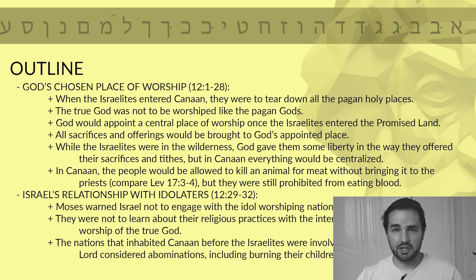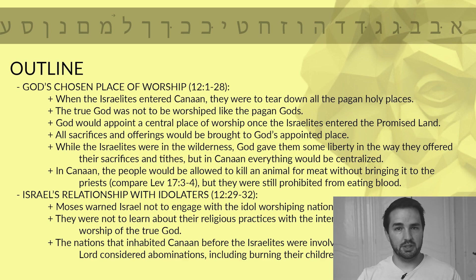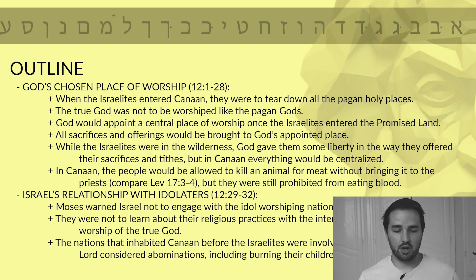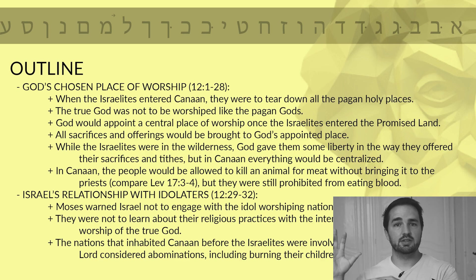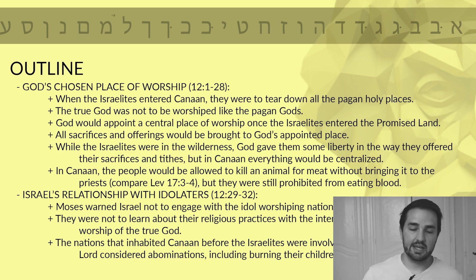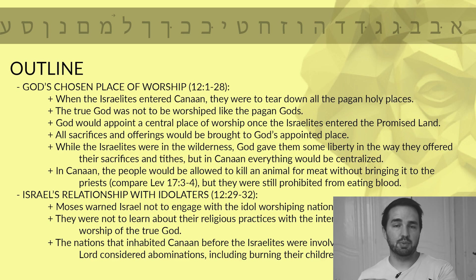I've broken this chapter down into two sections. The first section is definitely the biggest: verses 1 through 28 — God's chosen place of worship. When the Israelites entered the land of Canaan and took it, conquering it from the pagan people who lived there, they were supposed to tear down all of the pagan holy places where false gods were worshipped. The true God was not to be worshipped in the same way that the pagan gods were worshipped. Moses tells the people that God was going to appoint a central place of worship once the Israelites entered into the promised land, and all sacrifices and offerings would be brought to God's appointed place in the future.